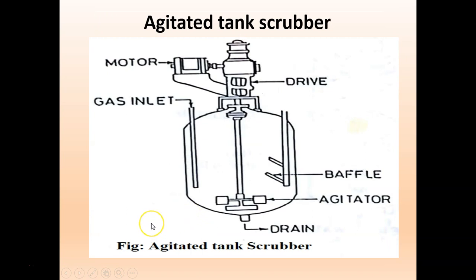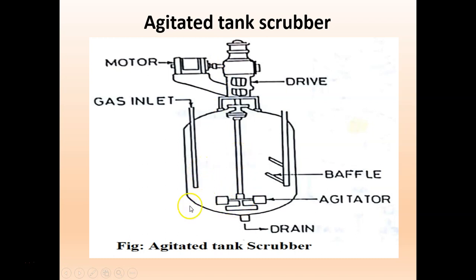The last one is the agitated tank scrubber. As the name suggests, agitated means disturbed. The polluted gas is sent through an inlet, and liquid medium is sent through a baffle. The polluted gas comes in contact with the baffle containing the liquid medium. A motor provides mechanical energy, and when it stirs, the agitator mixes the contents thoroughly. The polluted gas comes in contact with the liquid medium, and thereby the contaminants get absorbed.